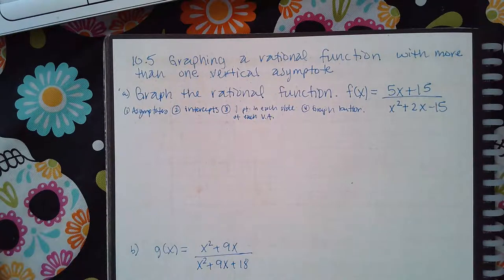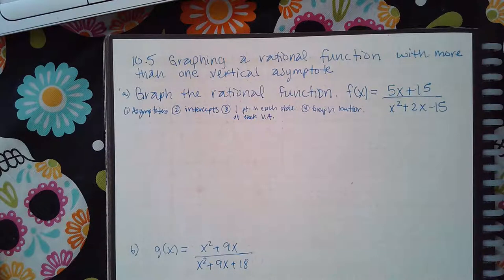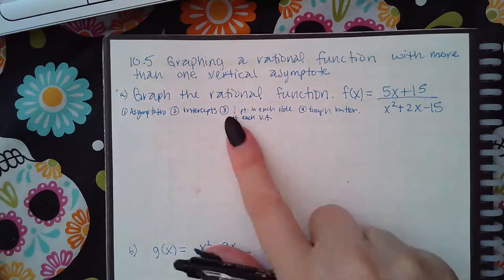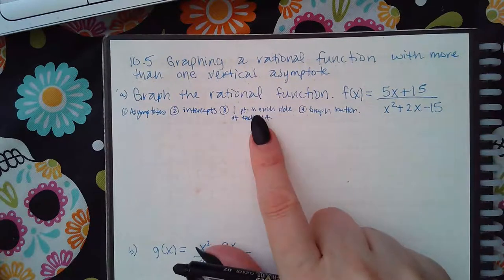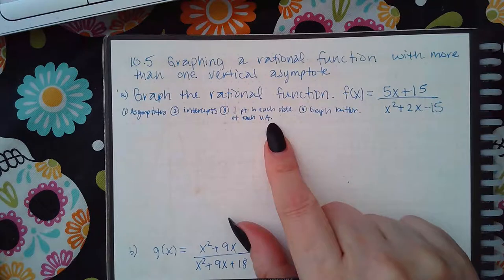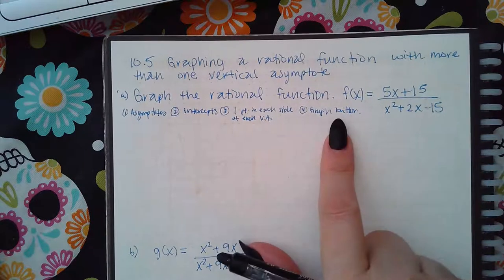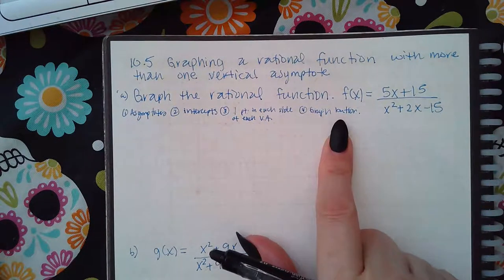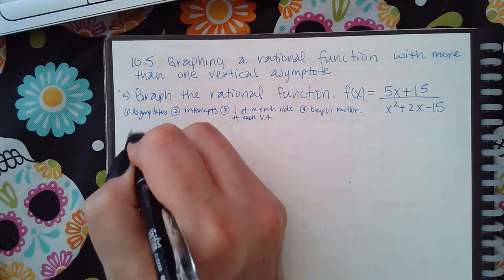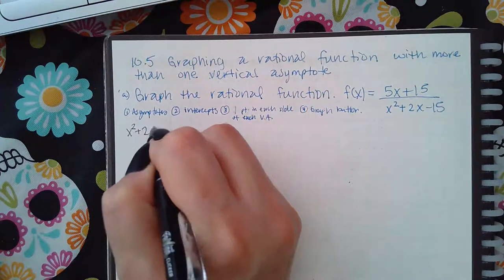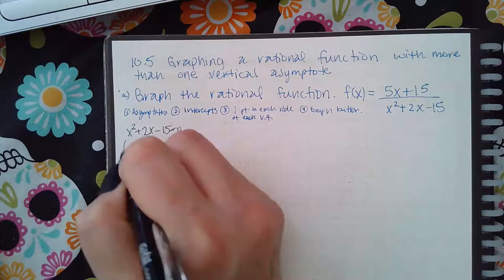Here we are graphing a rational function with more than one vertical asymptote. You have to plot all of your asymptotes, get all of your intercepts, and then one point on each side of each vertical asymptote. I'll explain what I mean when we get to it, and then hit the graph button and it'll draw it for you. First, for vertical asymptotes, I have to set the denominator equal to zero.